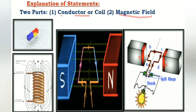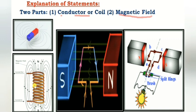A permanent magnet is a bar magnet — it has the automatic property of producing magnetic flux. An electromagnet means you have an inductive coil. When current flows through the inductive coil, magnetic flux is produced. If DC current flows — DC current is constant current — the flux also remains constant.